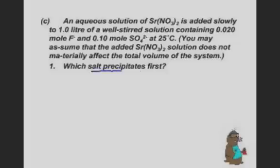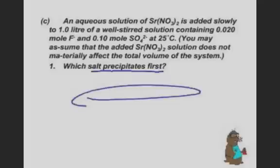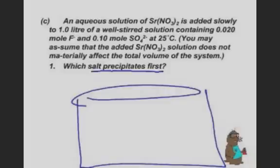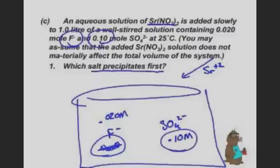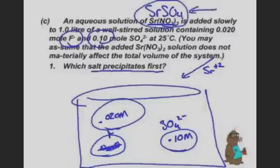Which salt precipitates first? We did a problem like this a little bit ago. This is where you've got the beaker. We've got strontium nitrate added slowly. What we care about is the strontium 2+. And what's down in the beaker is some fluorides and some sulfates. We just determined the molar solubility of strontium sulfate and strontium fluoride. The fluoride is 0.020 molar and the sulfate is 0.10 molar. By the way, this is strontium sulfate. Is that one of our exceptions, Mr. Sams? It is. All sulfates are soluble. It's barium strontium related. And this is one of those exceptions.